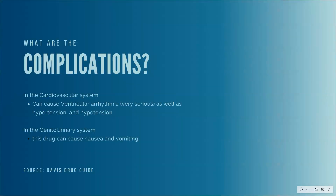What are the complications for naloxone? It doesn't necessarily affect a lot of different body systems compared to other drugs. Nevertheless, in the cardiovascular system, it can cause ventricular arrhythmias, which is very serious, as well as hypertension and hypotension. In the genitourinary system, this drug can cause nausea and vomiting.